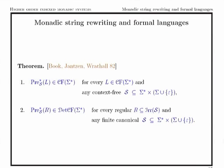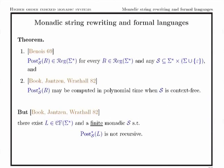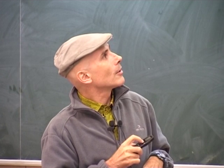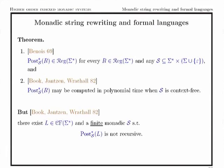Some important classical results: if we have a context-free language and a context-free string writing system, then the pre-image via the string writing system is again context-free. In the deterministic case, when we have a regular language and a finite canonical string writing system, we get a deterministic context-free language. Going forward, when we apply any monadic string writing system to a regular language, we always get a regular language, and when the system is context-free this language may be computed in polynomial time.